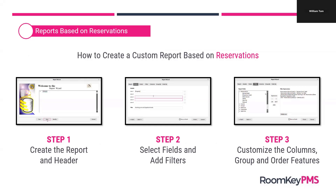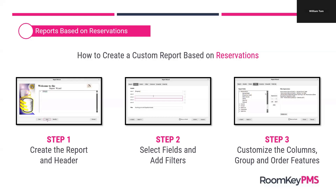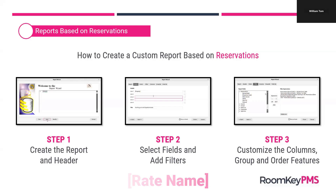This report is going to be based off of reservations, so we have to select that in step one. And it's going to be based off of specific types of reservations, which is what we'll look at in step two. We're going to use the rate name field to select and filter out the specific reservations we want to look at.